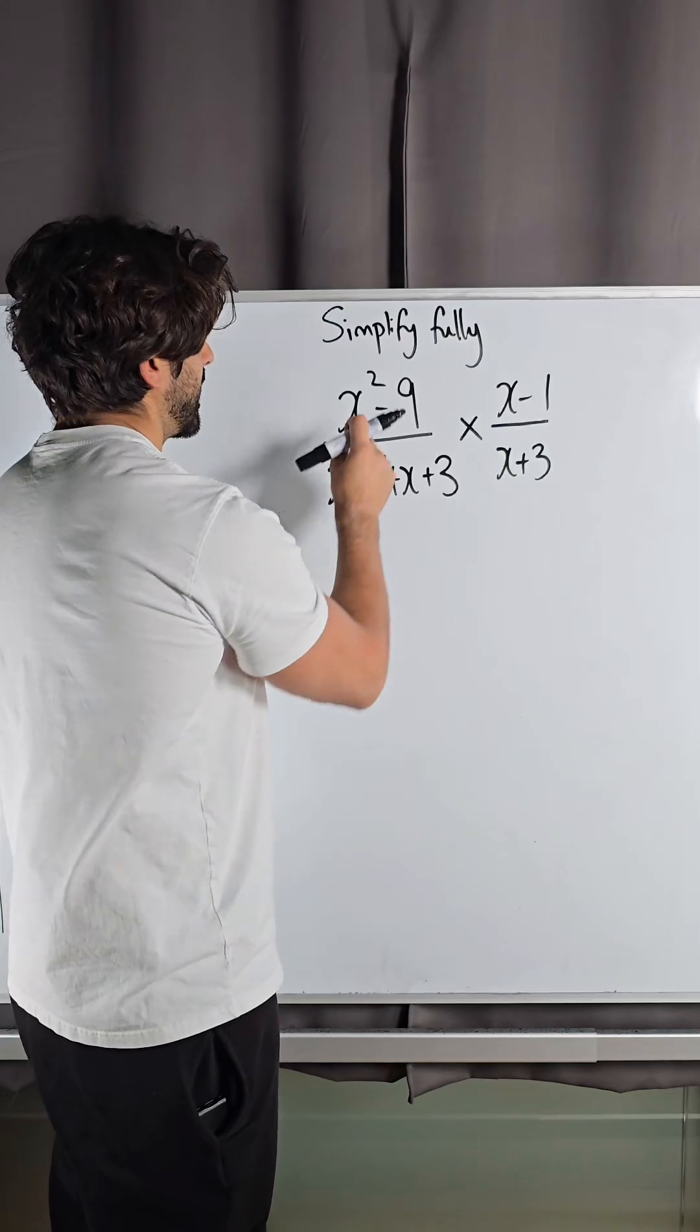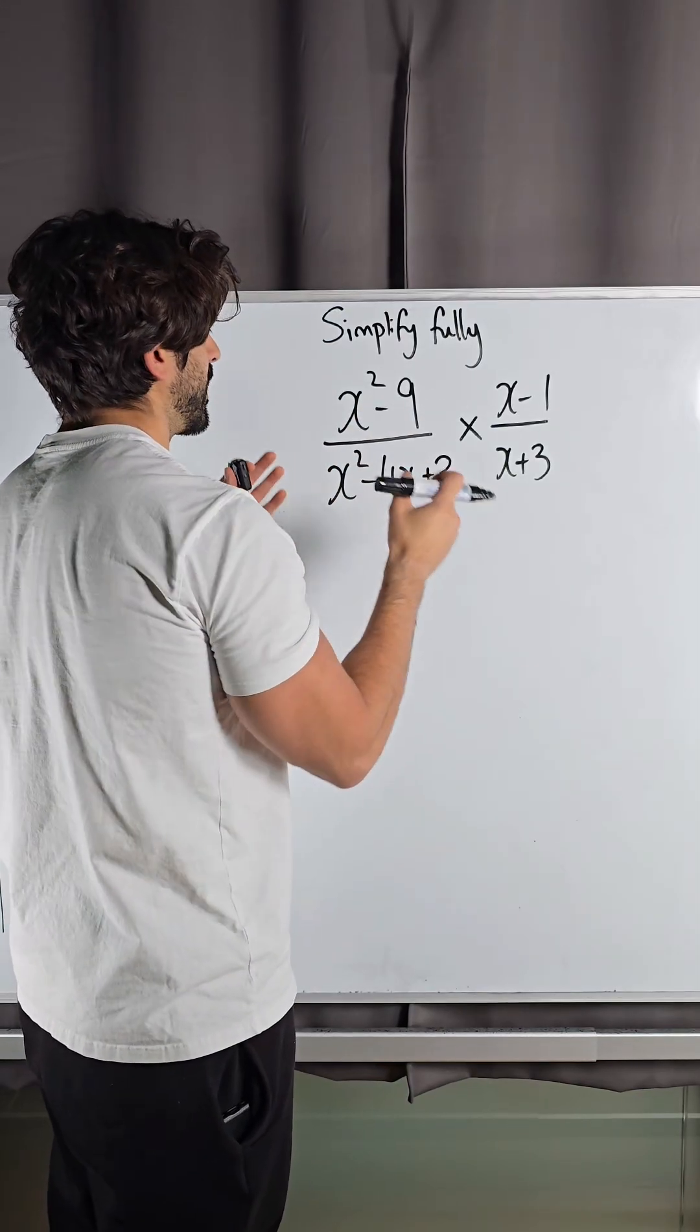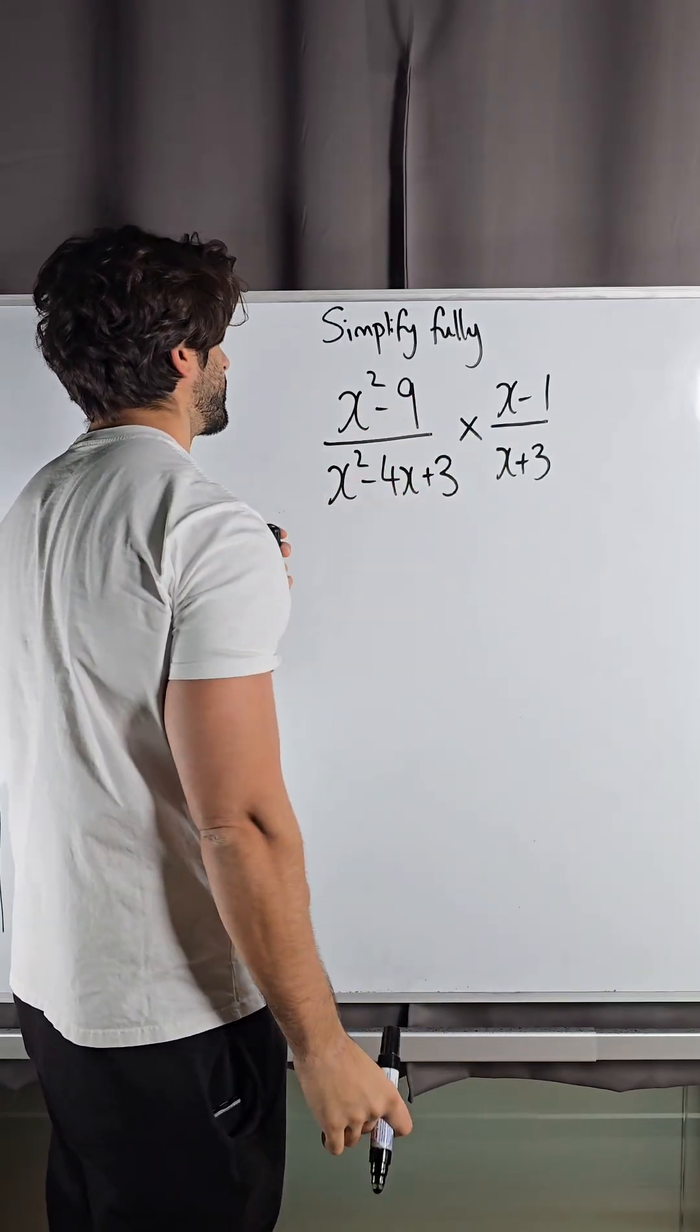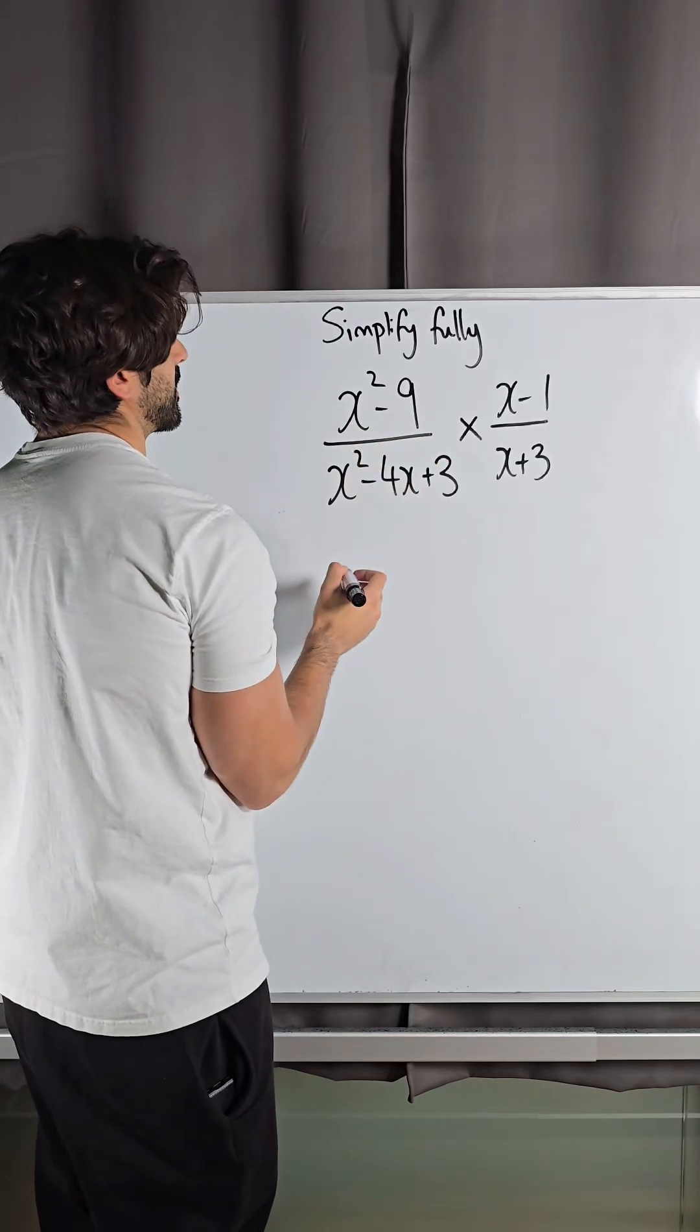So this is two terms, x squared and 9. We need to rewrite it as one term only by rewriting it as multiplication. Now, this is just difference of two squares.